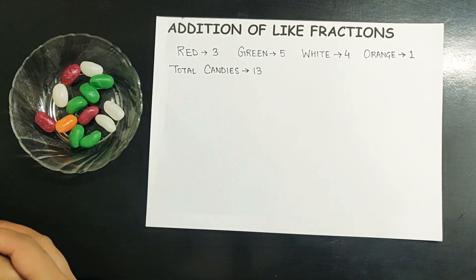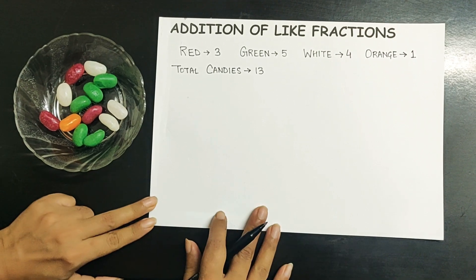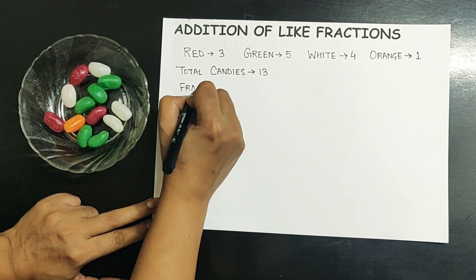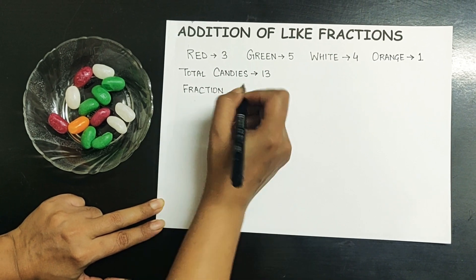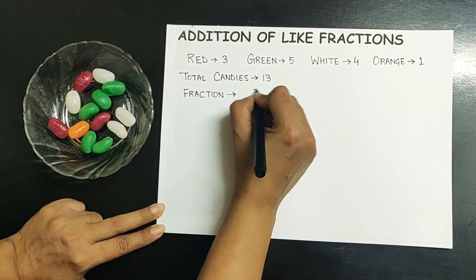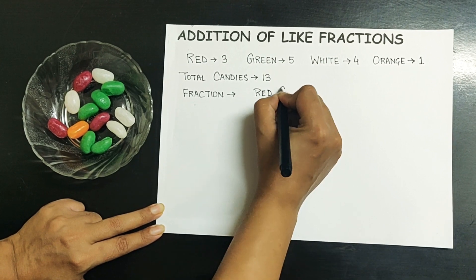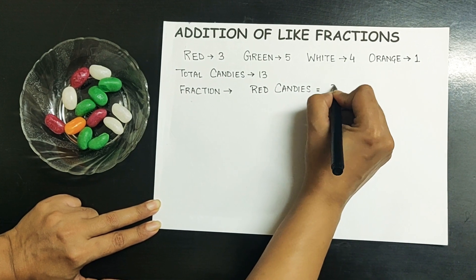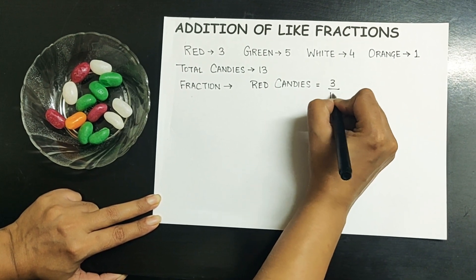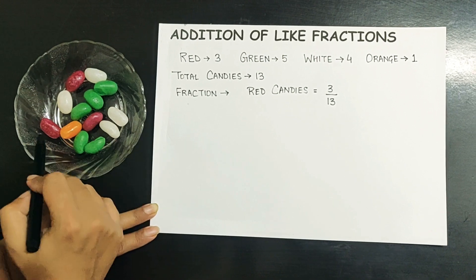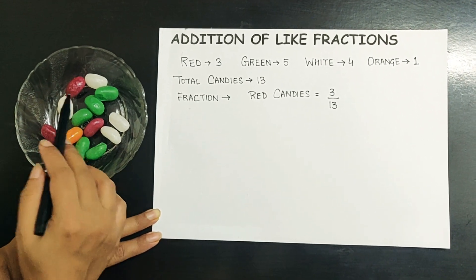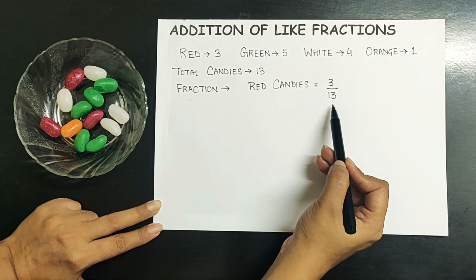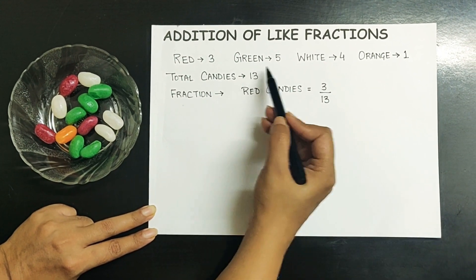The same can be expressed as fractions also. The total fraction of red candies is 3 upon 13. It's 3 out of 13. Since there are only 3 out of 13 candies that are red, we express the fraction as 3 upon 13.